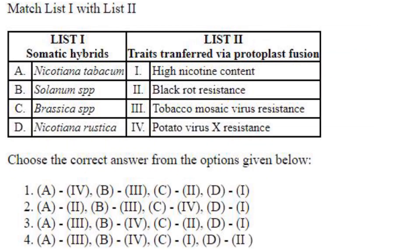Matching somatic hybrids with traits transferred via protoplast fusion: Nicotiana tabacum — tobacco mosaic virus resistance (A3); Solanum species — potato virus X resistance (B4); Brassica species — black rot resistance (C2); Nicotiana rustica — high nicotine content (D1). The answer is option 3: A3, B4, C2, D1.